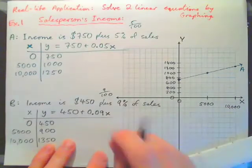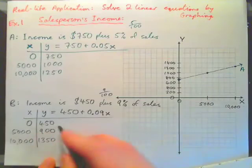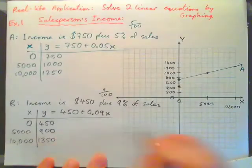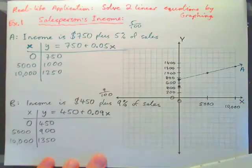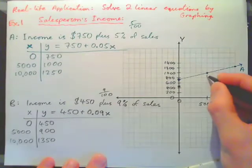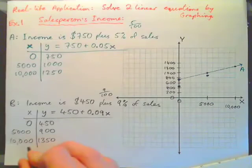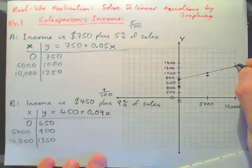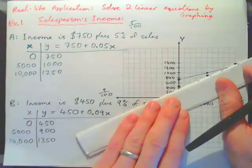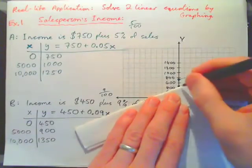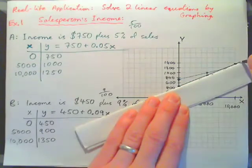And package B, if I sell zero, so if I sell nothing I'll get an income of $450 anyway, which is there. If I sell $5,000 I get an income of $900, which is there. If I sell $10,000 worth I get an income of $1,350, which is right underneath $1,400. Okay, so this straight line goes like that.